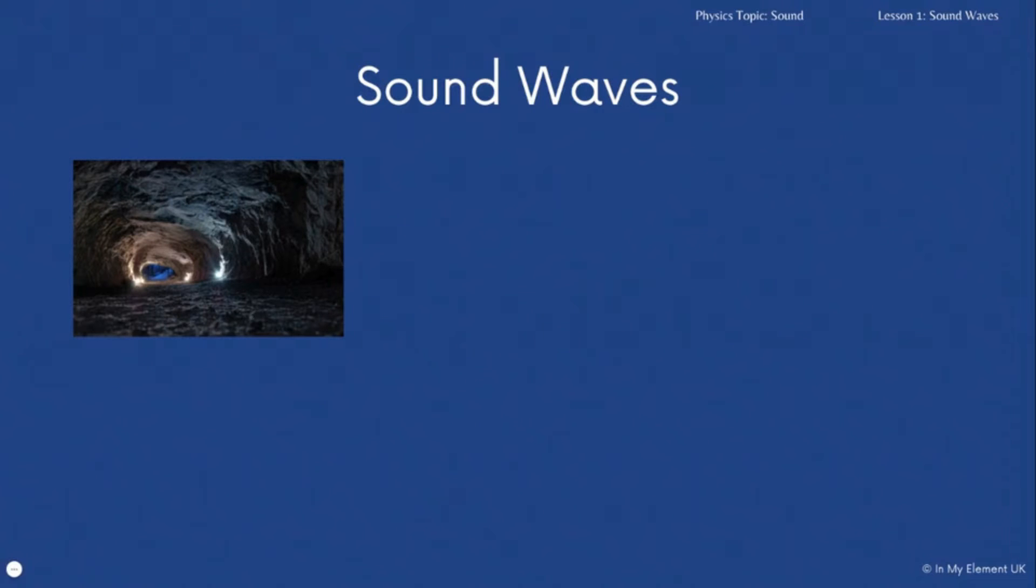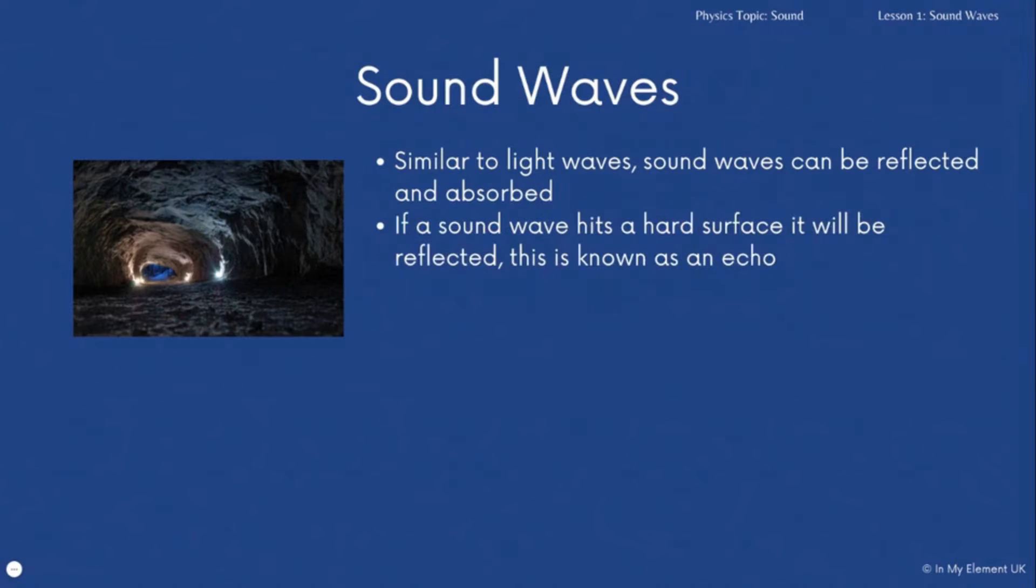A couple of other properties and features you need to know about sound waves: they can be reflected like light and water waves, they can also be absorbed. Now the image of a cave here is to show and remind you that if they're reflected, it can be known as an echo. You'll hear that repetition of 'hello, hello, hello' as you're shouting into a space like that, or if you walk under a bridge or tunnel, you can create that echo because those sound waves are reflecting off the walls around you.